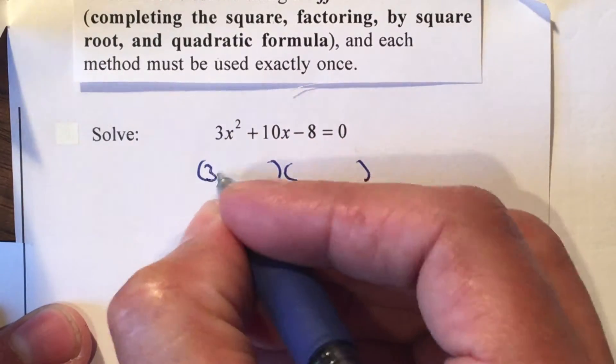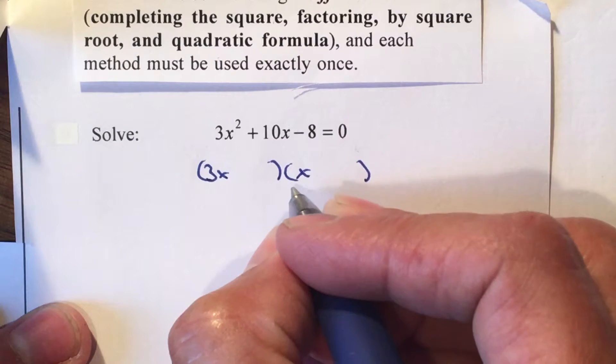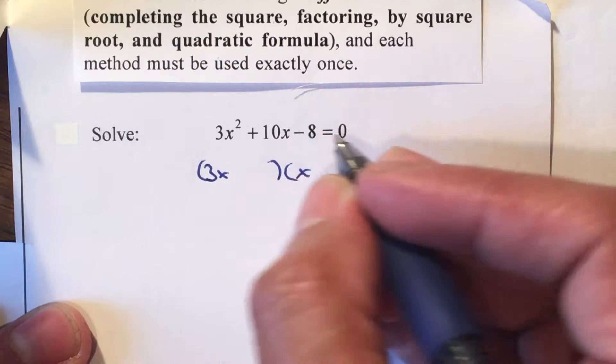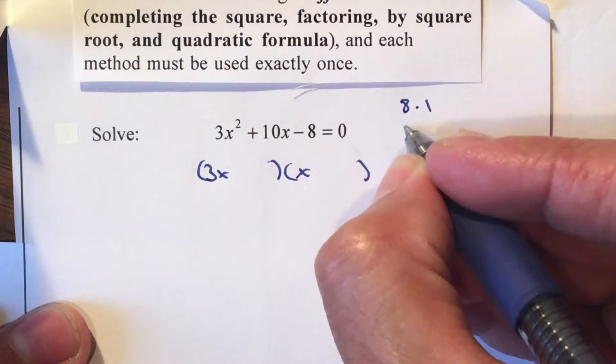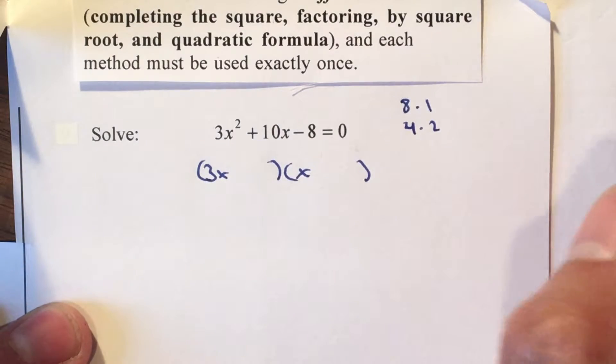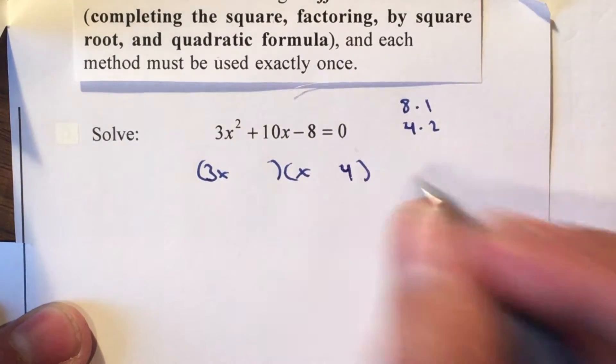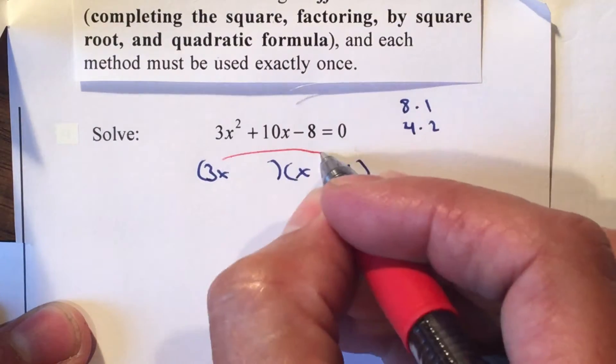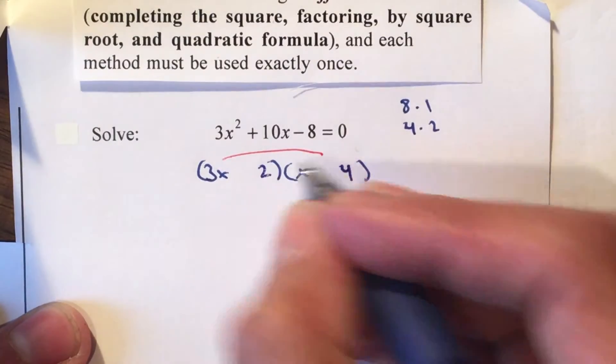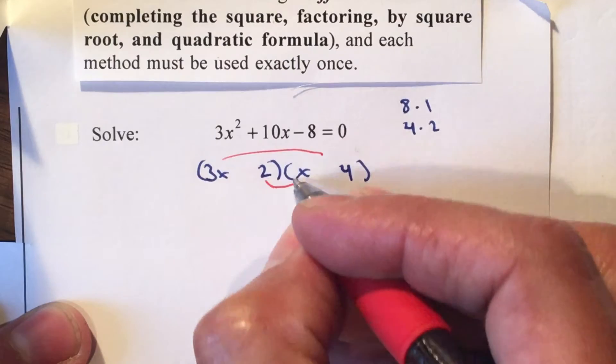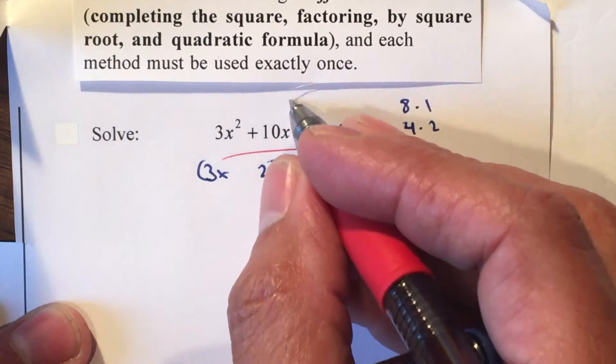Factors of 3x squared will be 3x times x. Factors of 8 can be 8 times 1 or 4 times 2. In this case I'm gonna use 4 and 2. I'm gonna place my 4 in here because if I multiply that gives me 12 and my 2 in here because if I multiply that gives me 2. So 12 minus 2 will give me the 10 that I need.